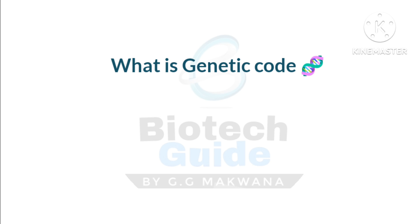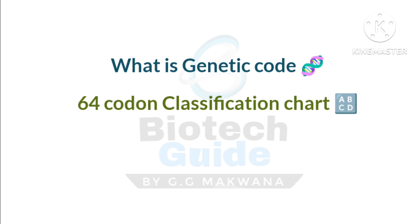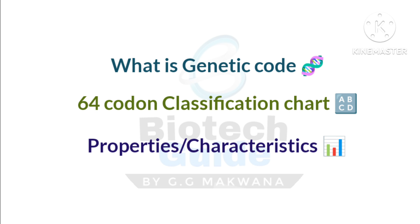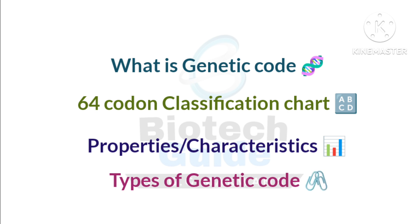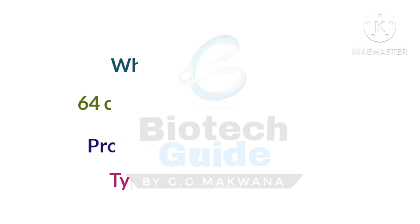Then we'll cover the total 64 codon classification chart, where we discuss each amino acid and the codons that code for it. I will also provide a short trick to memorize each codon and its related amino acid. Then we'll discuss the characteristics and properties of a genetic code, and finally the types of codon. Today's video is going on a very interesting level — stay tuned and enjoy this video lecture.